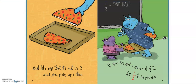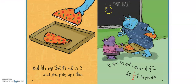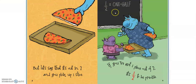But let's say that it's cut in two and you pick up one slice. If you've got one piece of two, it's half to be precise. So you'd write it like this: one half. The numerator and the denominator.